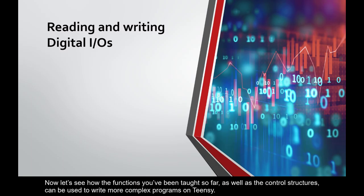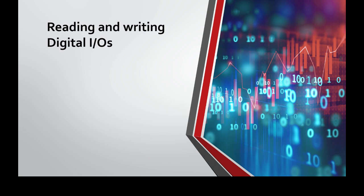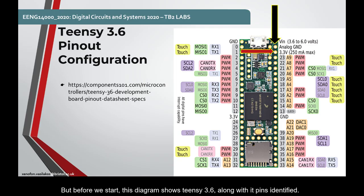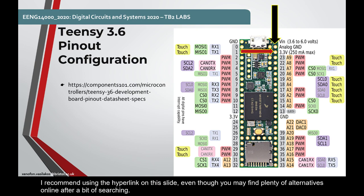Now let us see how the functions you've been taught so far, as well as the control structures, can be used to write more complex programs on Teensy. But before we start, this diagram shows Teensy 3.6 along with its pins identified. To learn more about the pins, you should search for Teensy 3.6 pinout configuration. I recommend using the hyperlink on the slide, even though you may find plenty of alternatives online after a bit of searching.